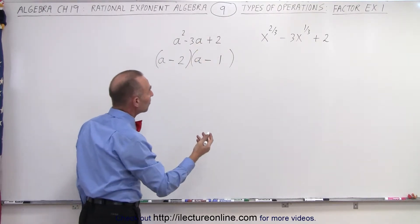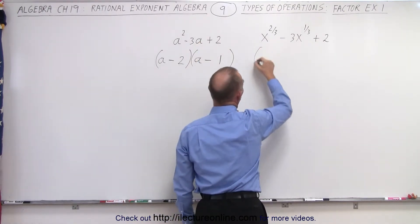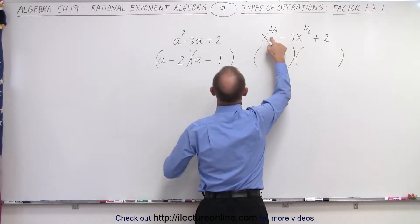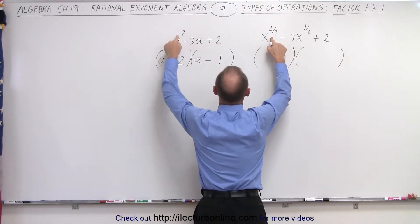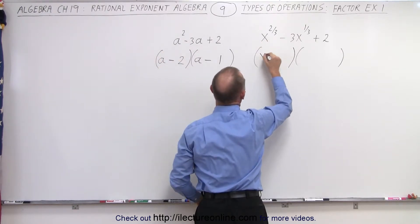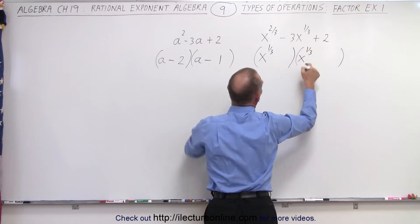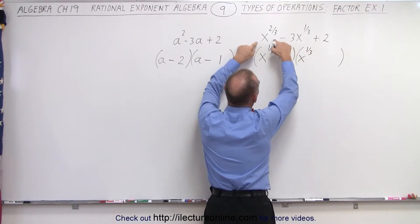So in the very same way, we can factor this as follows. Notice instead of a squared, we have x to the 2/3. So we can write this as x to the 1/3 times x to the 1/3 because when you multiply these together, you get x to the 2/3.